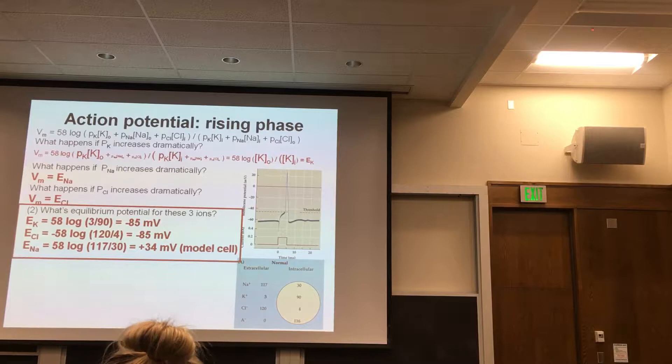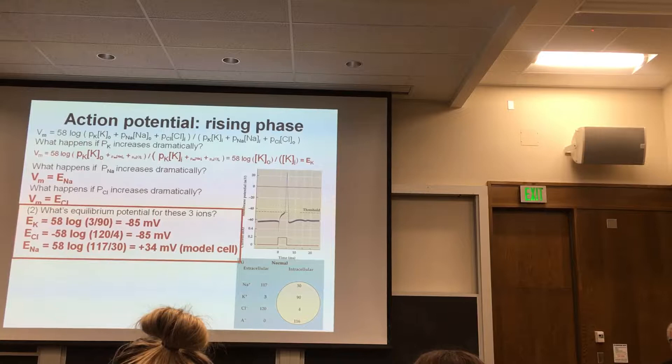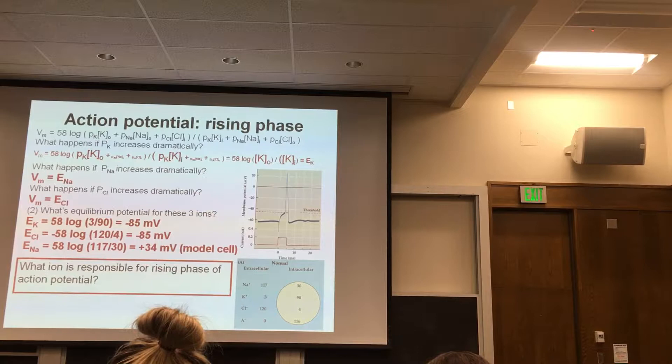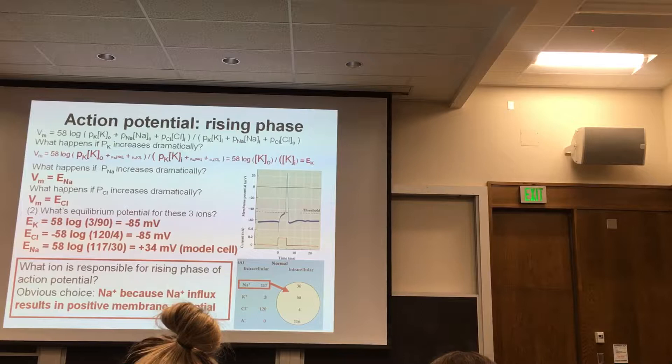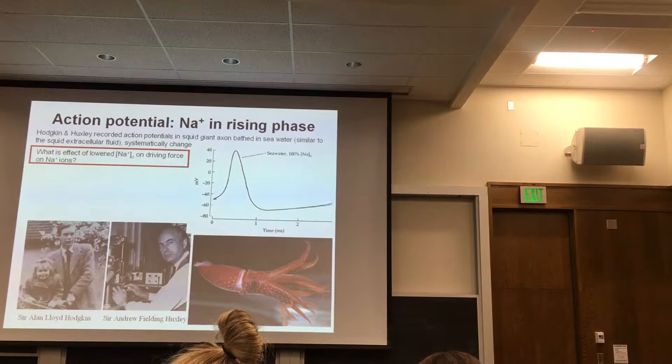These are the equilibrium potentials: for potassium and chloride they're very negative, but the only one that is positive is the one for sodium. So when sodium freely moves through the membrane, it's going to depolarize the cell enormously, and that's the basis for the action potential. So what ion is responsible for the rising phase? Sodium — and there's a lot of literature that now pretty much supports that as fact.